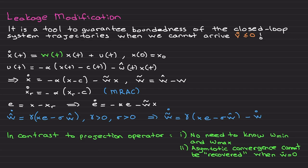I would like to compare it in contrast with the projection operator. In contrast to the projection operator, here we do not need to know w min, w max. I mentioned in the projection operator video that it is not a big deal if you really don't know w min and w max—just assume conservative estimates.